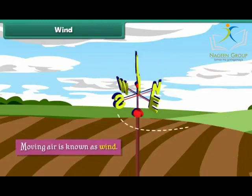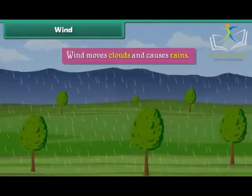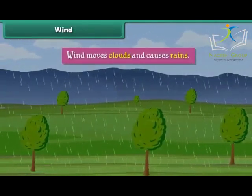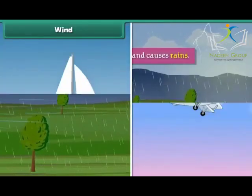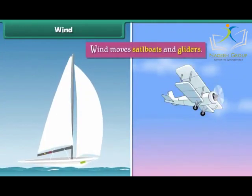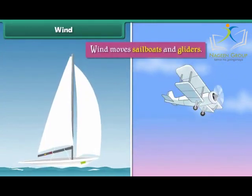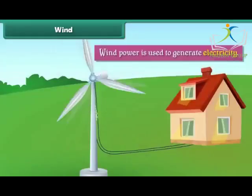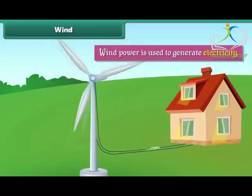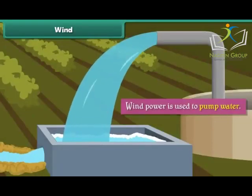Wind. Moving air is known as wind. Wind moves clouds and causes rain. Wind also moves sailboats and gliders. Wind power is used to generate electricity and to pump water.